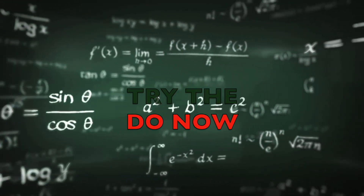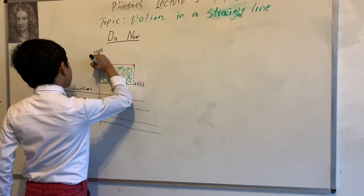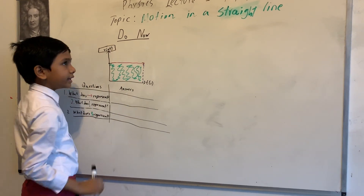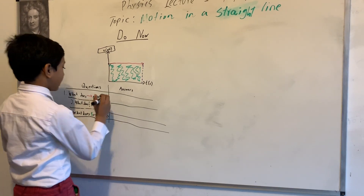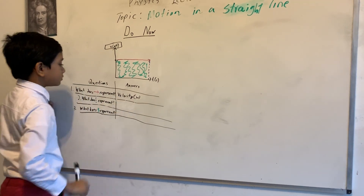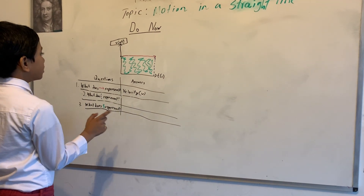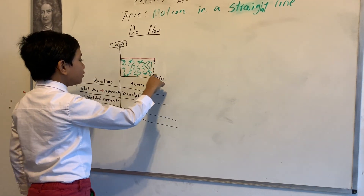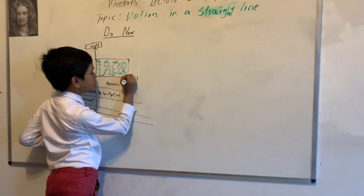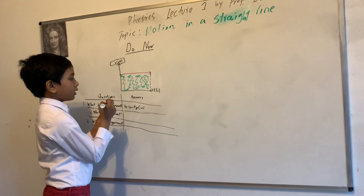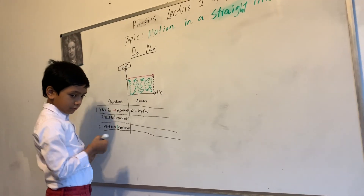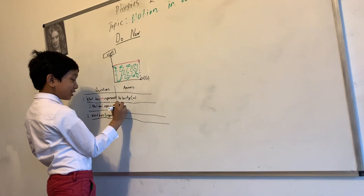Pause the video and try on your own. The red line protrudes from the y-axis, and the y-axis represents velocity, or v. So the answer to question one is velocity, v. For number two, the blue line protrudes along t, seconds, t — so that means the answer is time.